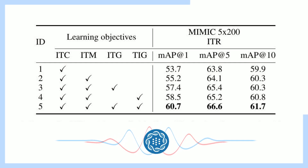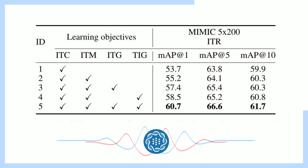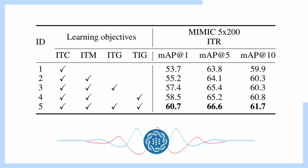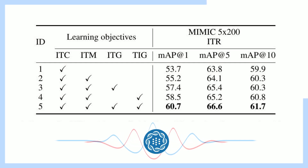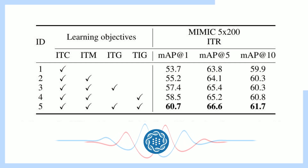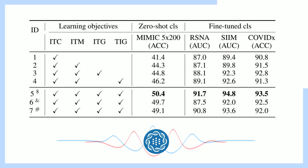There's one detail I found particularly interesting: the researchers conducted an ablation study, where they tested different versions of MedUnifier to see how each component contributes to its overall performance. What they found is that each of those four learning objectives plays a critical role — when they removed even one, the AI's performance dropped significantly. It's like a finely tuned machine where every part is crucial, and it highlights the importance of a holistic approach to AI development where all aspects of learning are considered and integrated.